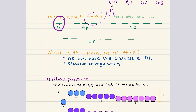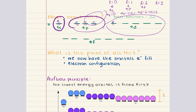When l is equal to one, we have our 4p subshell. ML values can take on negative one, zero, or positive one — that's three values of ml — so we have three orbitals in our 4p subshell, each accommodating two electrons. When l is equal to two, we have our 4d subshell. Our ml values can be negative two, negative one, zero, one, or two — five ml values — which means there are five orbitals in our 4d subshell, each holding two electrons with opposite spins.